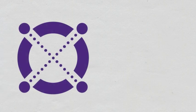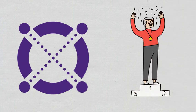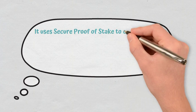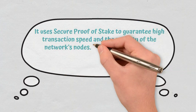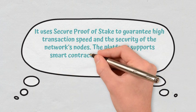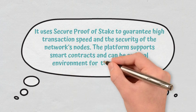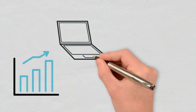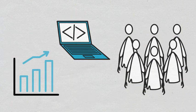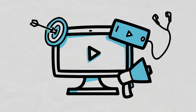Conclusions. The Elrond project operates on its own blockchain and has all the potential to develop exponentially in the future. It uses secure proof-of-stake to guarantee high transaction speed and the security of the network's nodes. The platform supports smart contracts and can be an ideal environment for the development of dApps. The network's scalability, future updates, and a team that shows professionalism are Elrond's strengths.